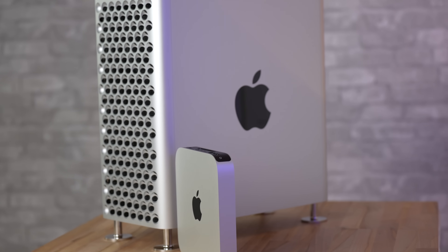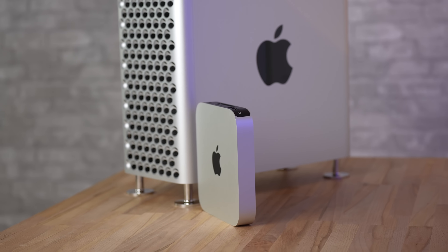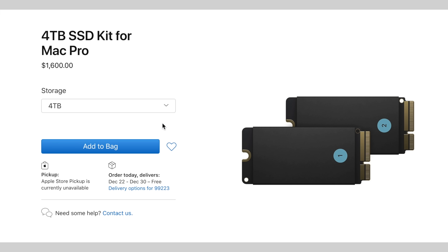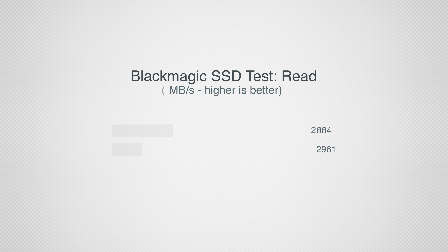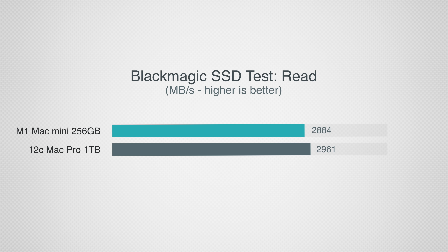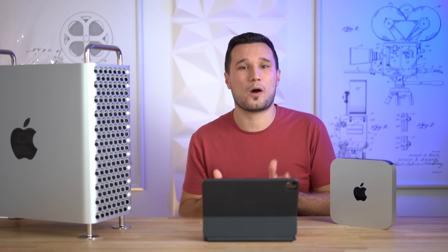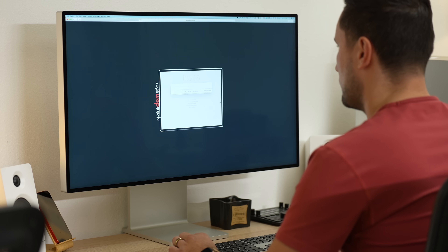Both of these machines have ultra-fast SSDs. You can upgrade the Mac Pro's storage, but you have to buy Apple's expensive SSDs, whereas the Mini's is built in. As far as speeds, read speeds are very similar, but for write speed the Mac Pro is about 600 megabytes per second faster.